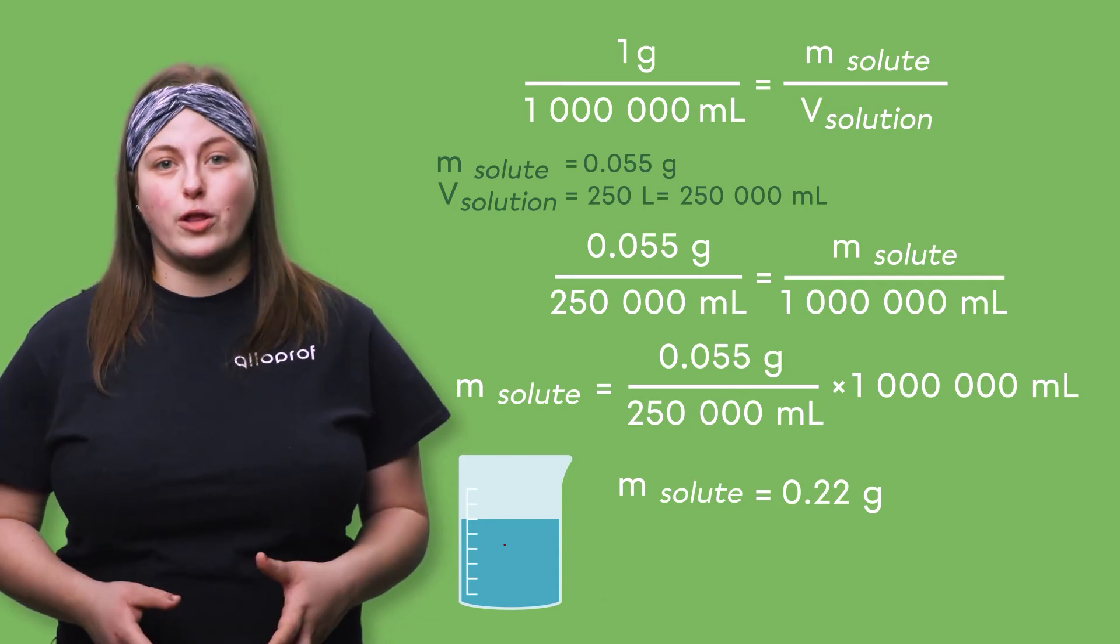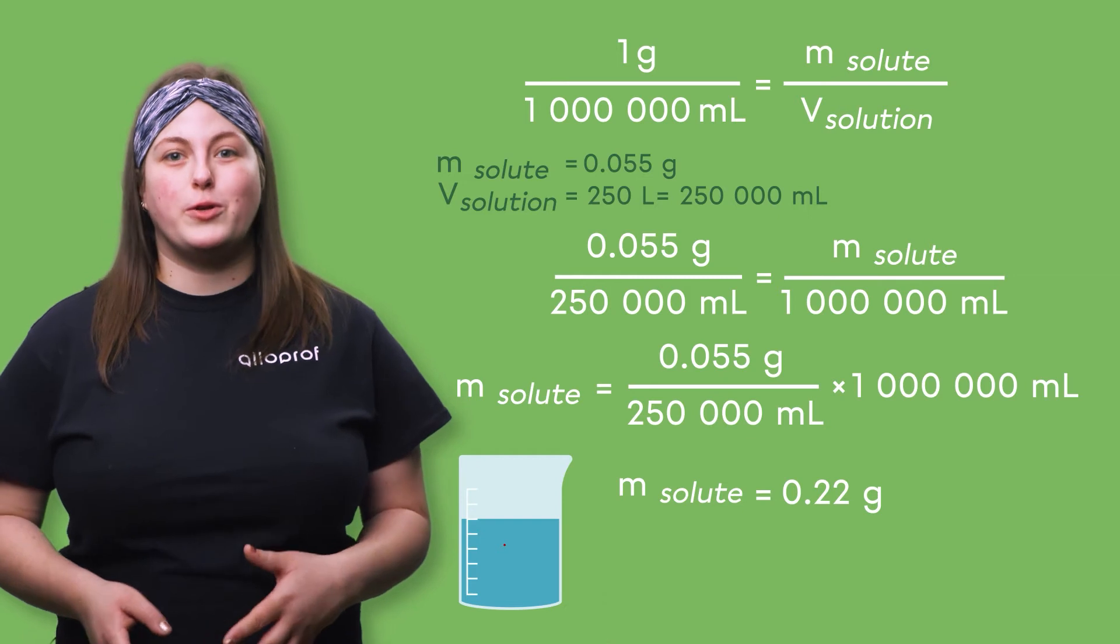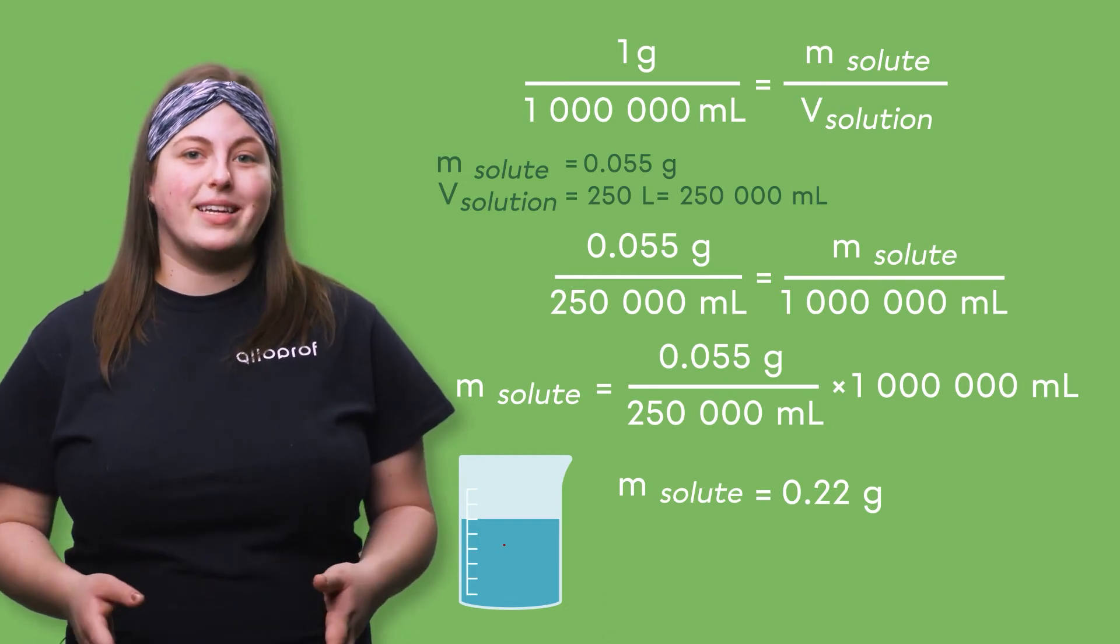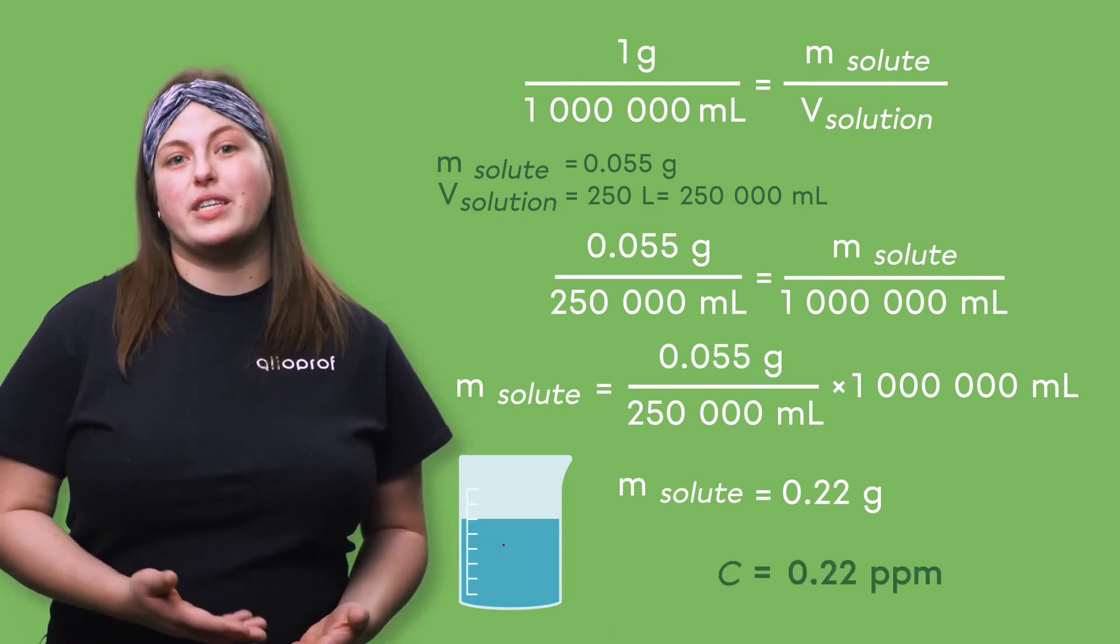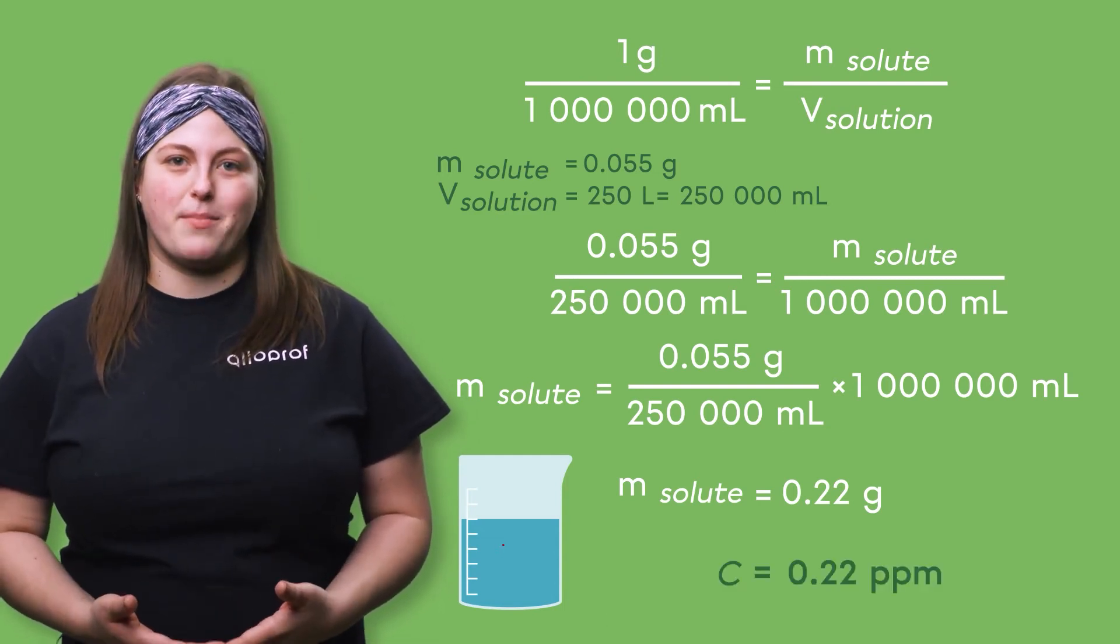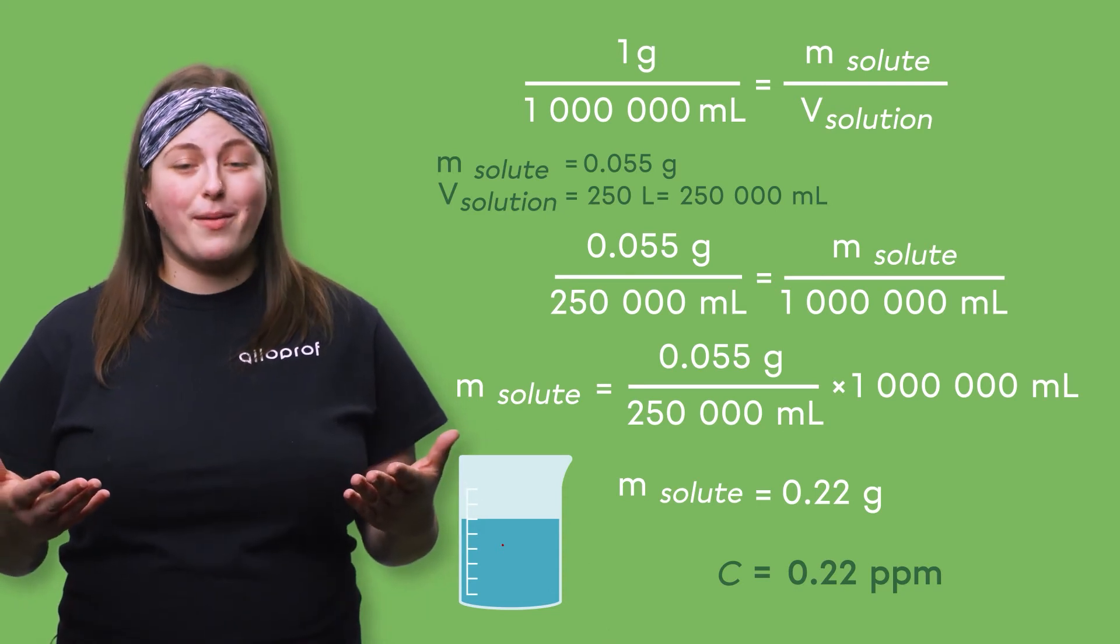Since we have a solute mass of 0.22 grams in a solution of 1 million milliliters, we can say that we have a concentration of 0.22 ppm of pollutant in the lake. We just solved our problem.